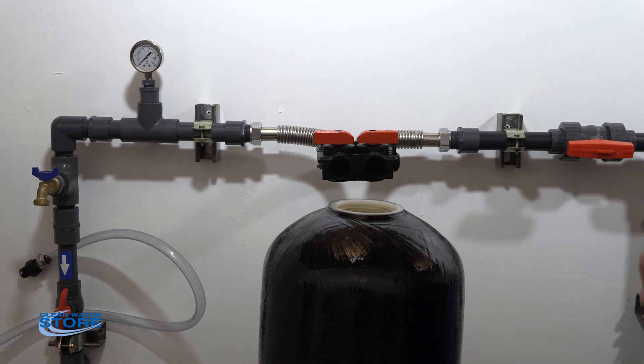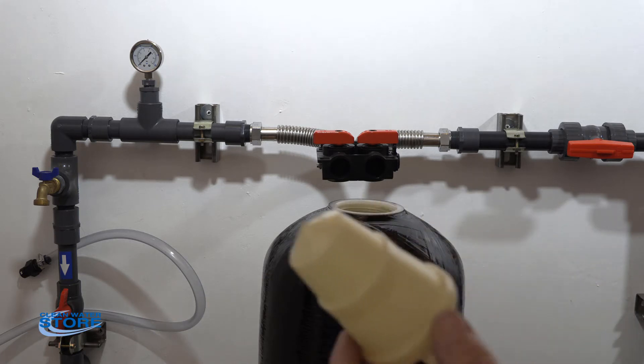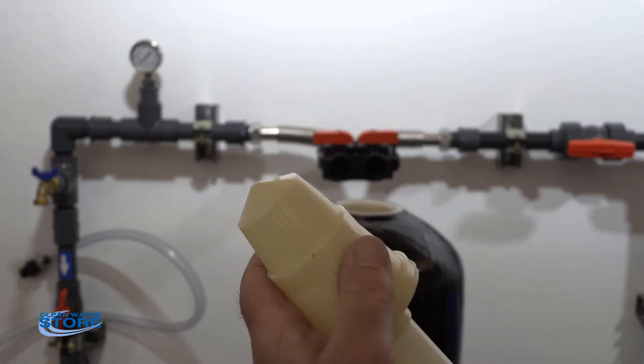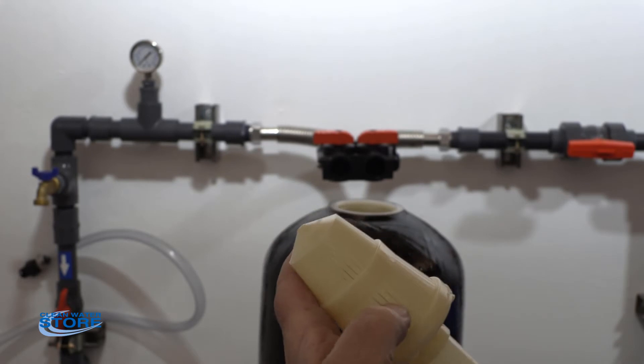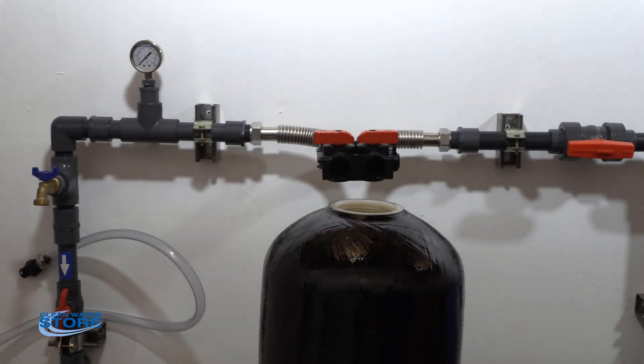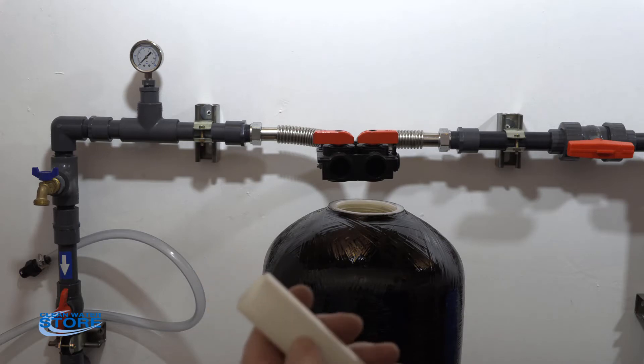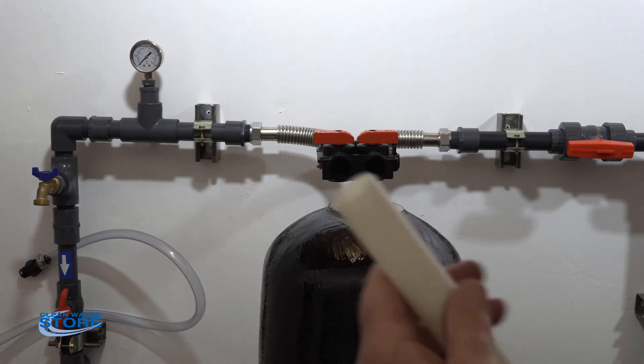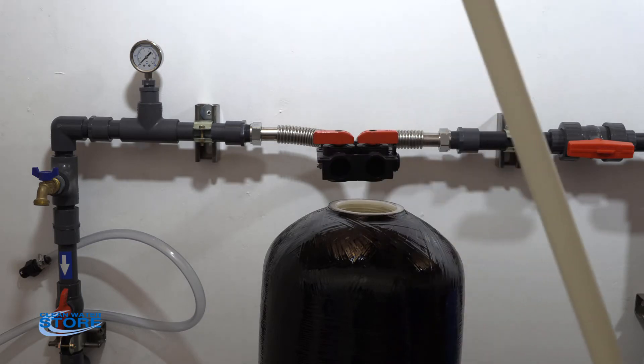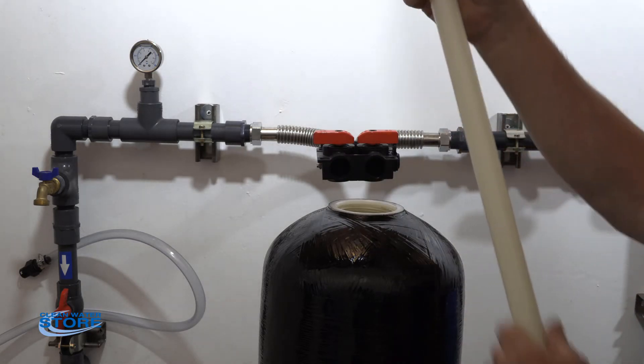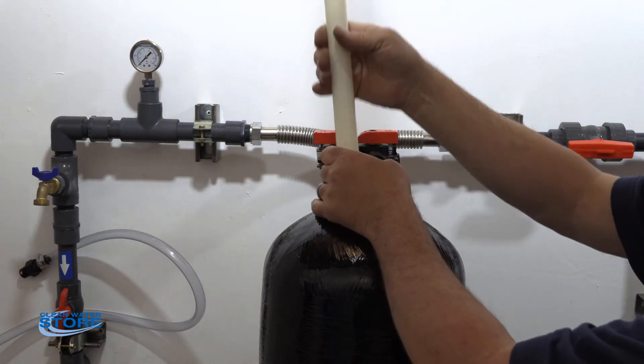So the first thing we're going to do is install the D-tube back into the tank. What you want to do is inspect the basket end here, make sure there's no cracks or broken pieces in here. If you see that, also you want to look for scratches up here where your O-ring seats. If you see any of that kind of damage, you're probably going to want to replace your D-tube.